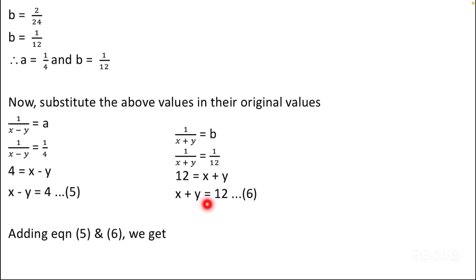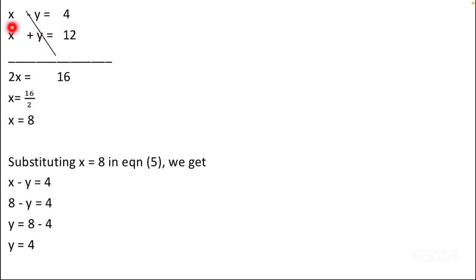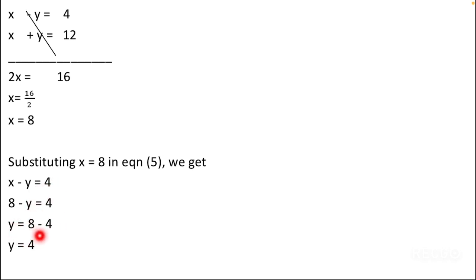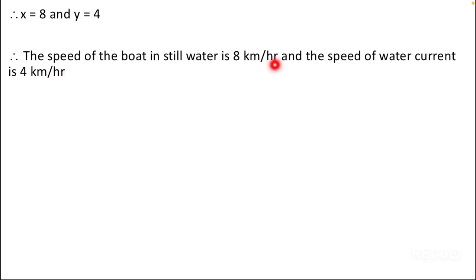Adding equations 5 and 6: (x minus y) + (x plus y) = 4 + 12. The y terms cancel, giving 2x = 16, so x = 8. Substituting x = 8 into equation 5: 8 minus y = 4, so y = 4. Therefore the speed of the boat in still water is 8 kilometers per hour and the speed of the water current is 4 kilometers per hour.